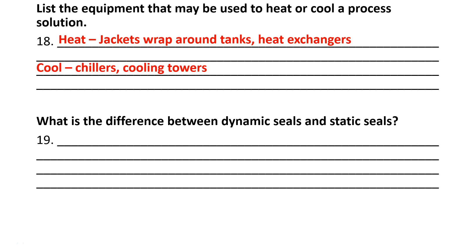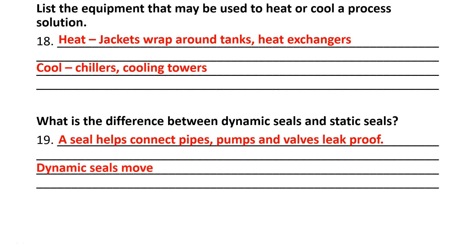What is the difference between a dynamic seal and a static seal? Seals help connect pipes, pumps, and valves, and make sure they will not leak — they're leak-proof. Dynamic seals will move with the substance, whereas static seals do not move; they stay in one location. An o-ring on a thermos bottle would be a good example of a static seal. Dynamic seals might be found on an engine or a piston.